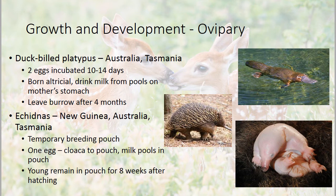Looking at growth and development, we'll start with oviparous mammals. The duck-billed platypus is only found in Australia and Tasmania. They normally have two eggs and incubate them for 10 to 14 days. They're born altricial. Monotremes — the mammals that lay eggs — don't have nipples, so milk comes out of the skin. In the platypus it pools in puddles on the mom's stomach and the babies drink it off her stomach. They stay in the burrow with their mom for four months before leaving.